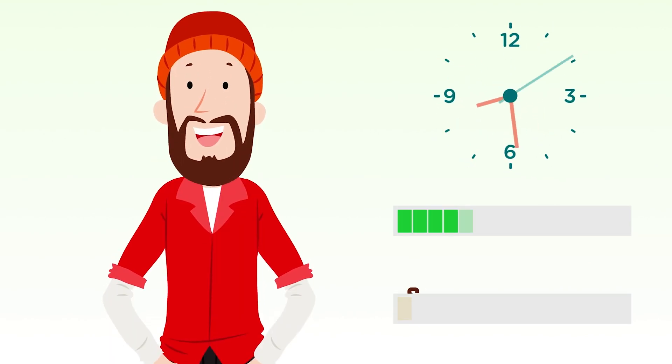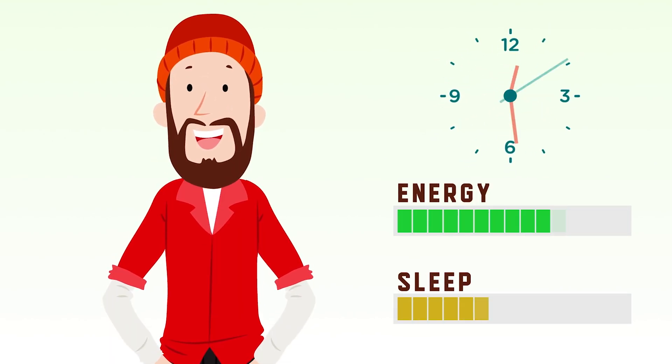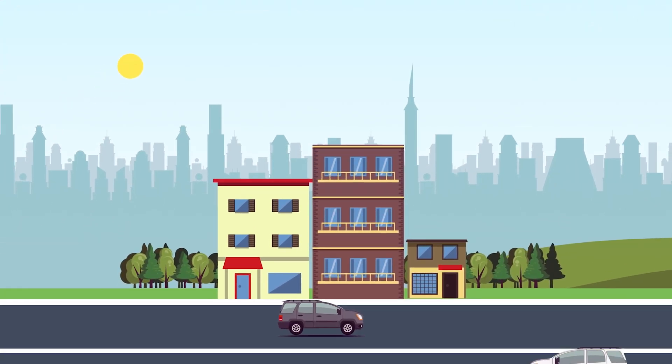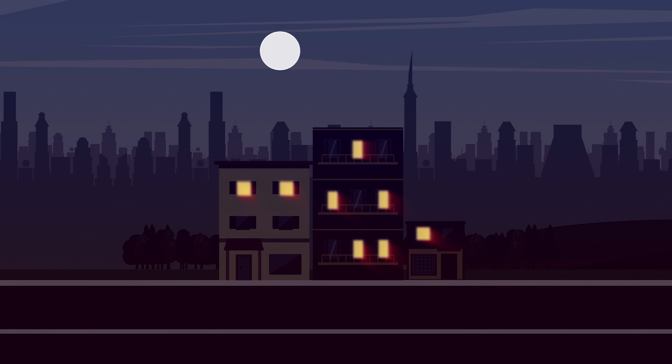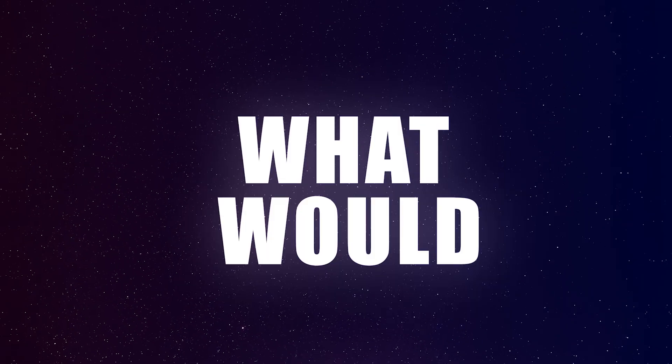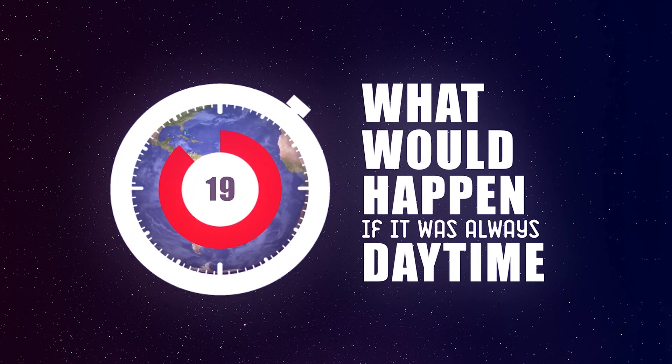The people that live in these places have reported having more energy and needing less sleep. Eventually, however, the regular day and night cycles return, and the sun sets again as usual. But what would happen if it was always daytime? What if the entire planet was always covered in sunlight?